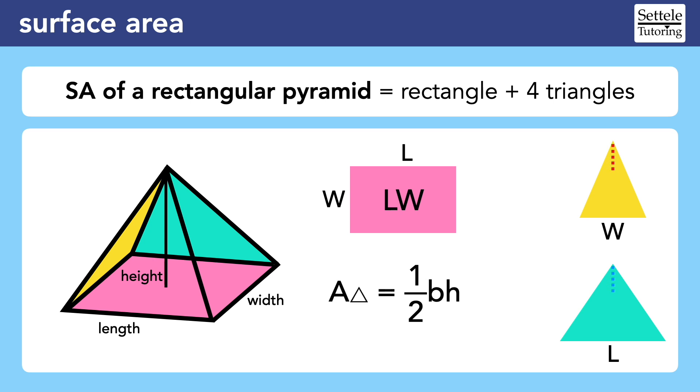The SAT reference chart reminds us that the area of a triangle is one half the base times the height. But if we just use the height that we were given for the pyramid, we will be falling into a trap. Notice that the given height is not on either triangle. It's completely inside the pyramid, not on any of the faces.